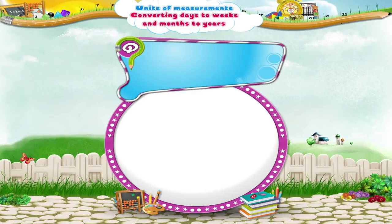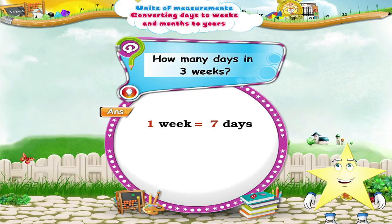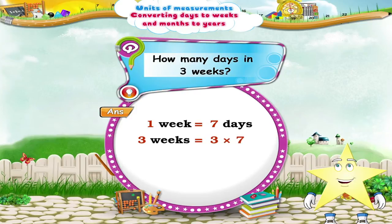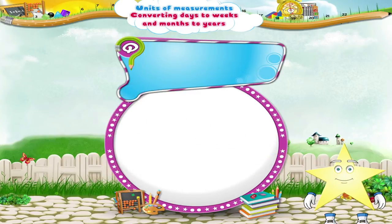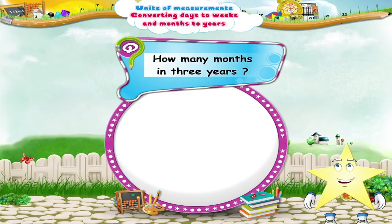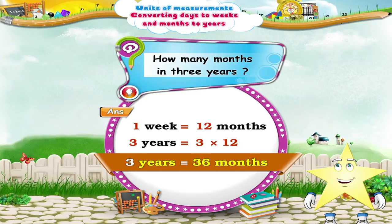Solve these problems. How many days in 3 weeks? 3 weeks equals 3 multiplied by 7, which equals 21 days. Finally, how many months in 3 years? 3 years equals 3 multiplied by 12, which equals 36 months.